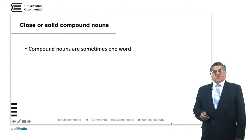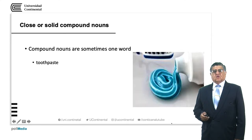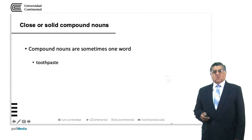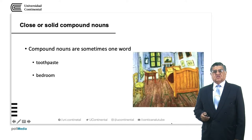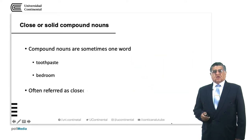We also have compound nouns that are formed by one word: 'toothpaste' — tooth is one word and paste is another. 'Bedroom' — bed is one word and room is another.